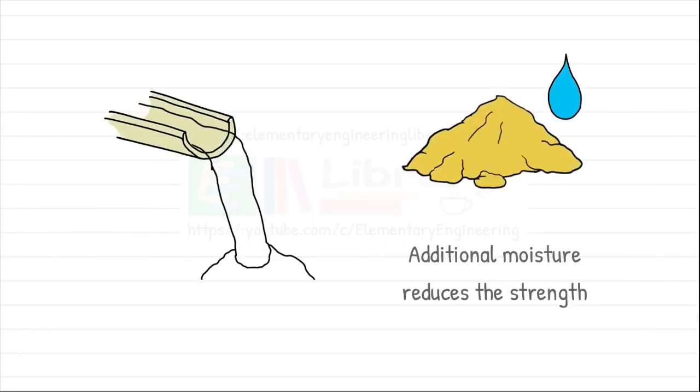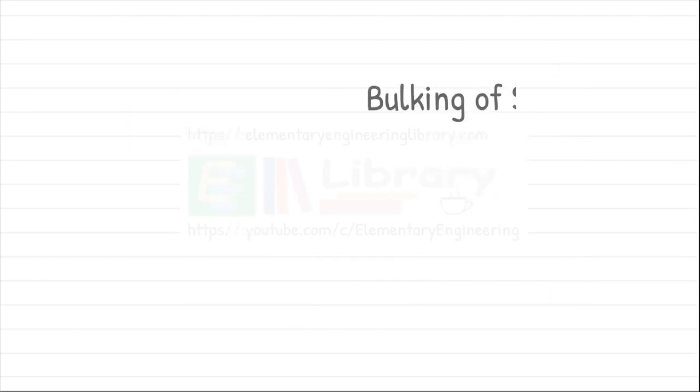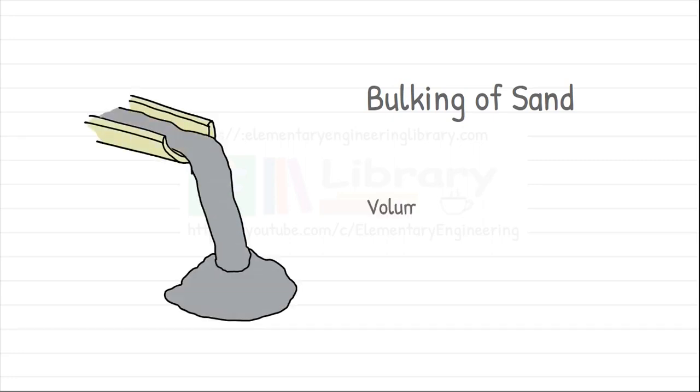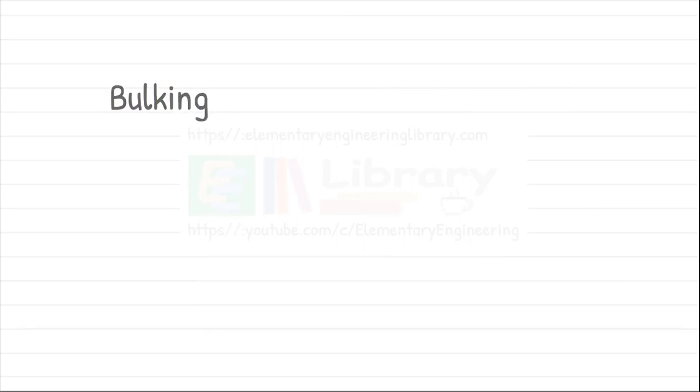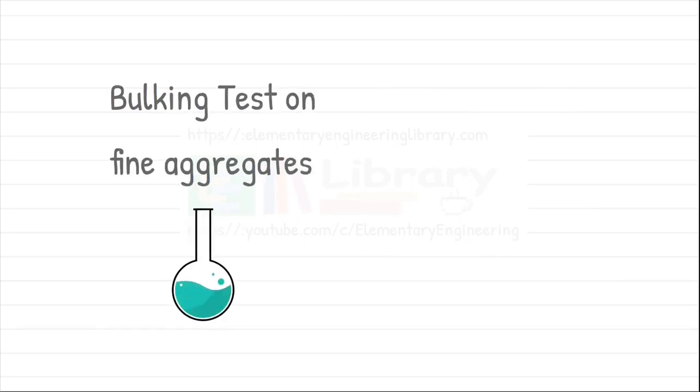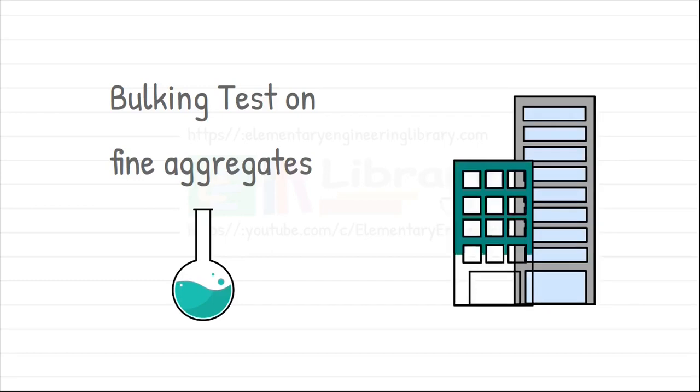Also, additional moisture content present in the sand can reduce the strength of the concrete. So, to mitigate the bulking effect of sand during concrete mix preparation, the volume of sand is adjusted by increasing it to a specific percentage in the mix. Bulking test on fine aggregates has to be performed before using it in construction.